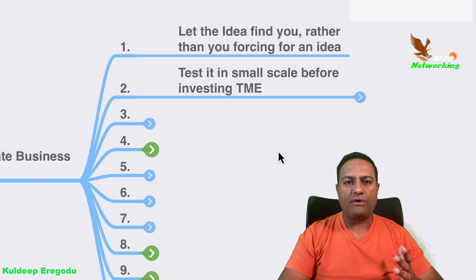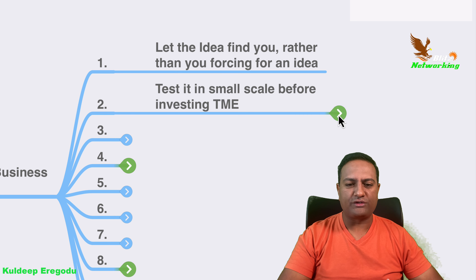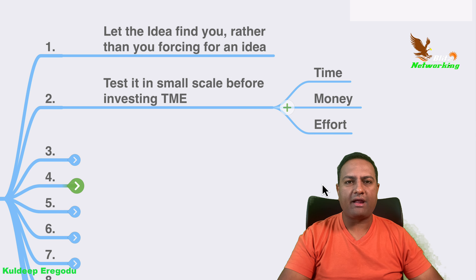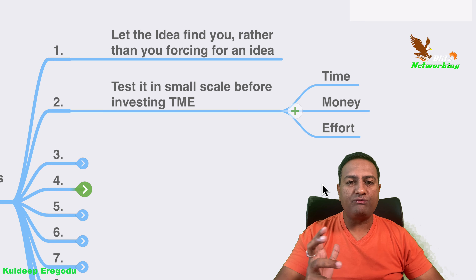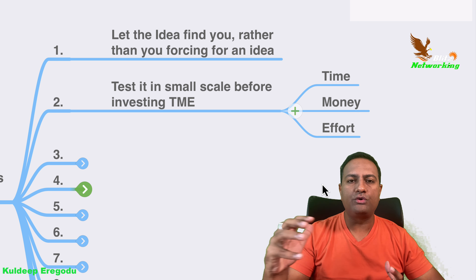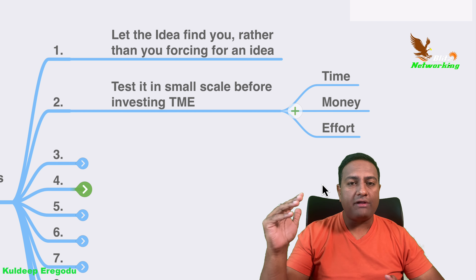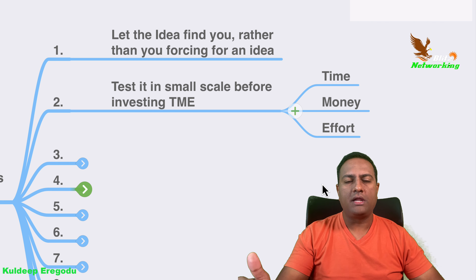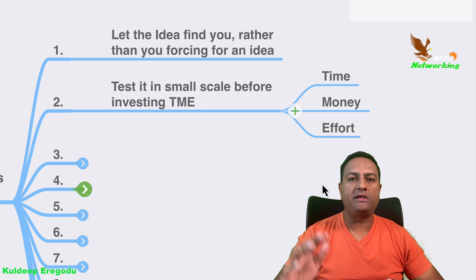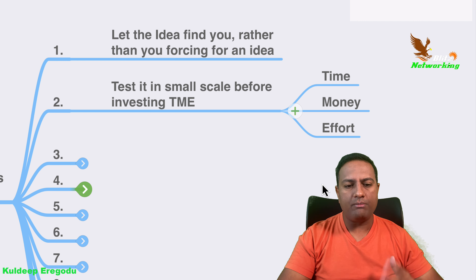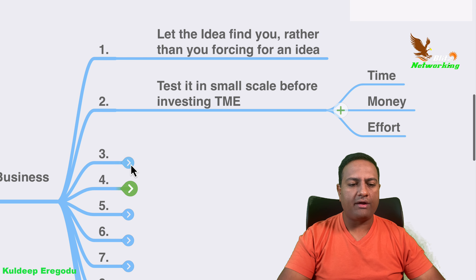Step two: once you have decided on an idea, test it in small scale before investing TME — time, money, and effort. You need to test whether it is going to work out before scaling, and whether it will work for the long term. Have a long-term vision — 10 years, 20 years. That is the kind of vision you should have before investing your time, money, and effort.